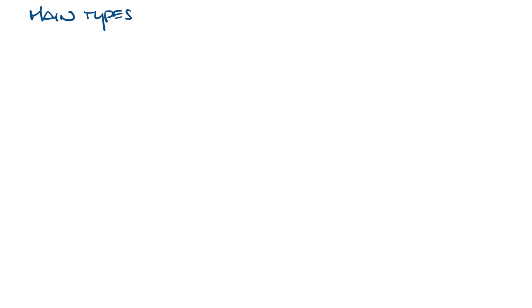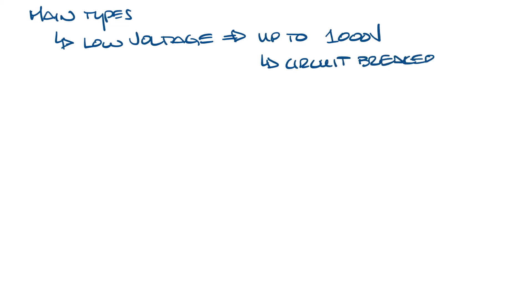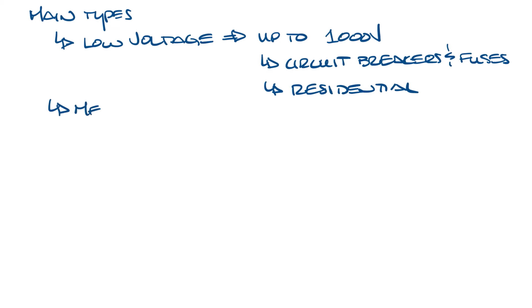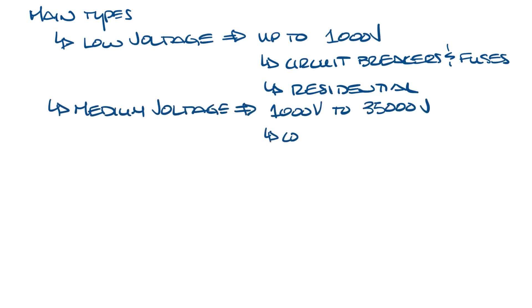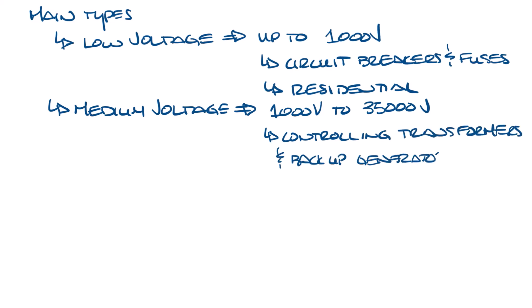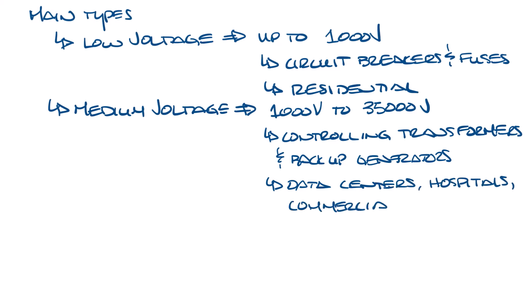There are three main types of switchgear used in buildings and data centers. Low voltage switchgear is used for systems up to 1,000 volts managing power within the facilities — examples would be circuit breakers and fuse panels, which you're probably familiar with from your home. There's also medium voltage switchgear, which handles 1,000 to 35,000 volts, often controlling transformers and backup generators. You'll see these in data centers, hospitals, and other commercial and industrial applications.